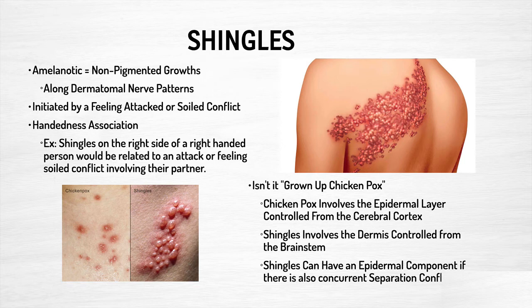Chicken pox and the issue with the epidermis is a separation conflict, whereas the dermis — like we've been talking about — is an attack or a feeling-soiled conflict. Shingles can also have an epidermal component if there was a concurrent separation conflict. We are extremely complex beings — you could feel attacked by someone, feel soiled and attacked, but at the same time know you're going to be separated from this person, or want to be separated from them, which affects the epidermis. There are so many different interpretations. When you are aware of the model of GNM and know the five biological laws, it changes so much about how you interpret the world and these symptoms.